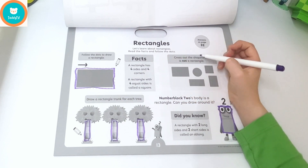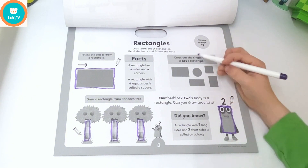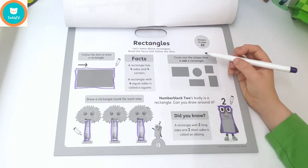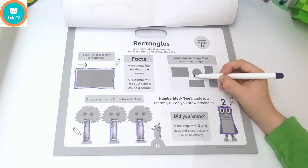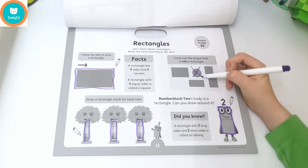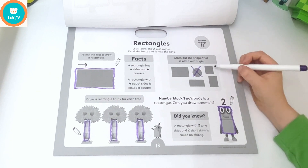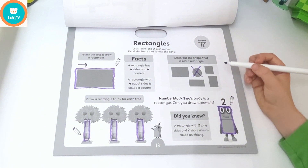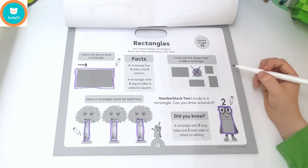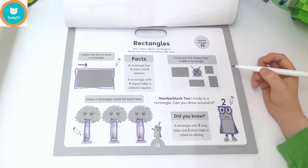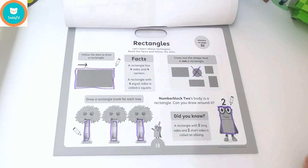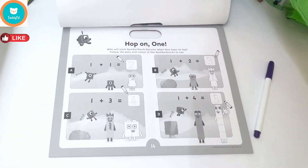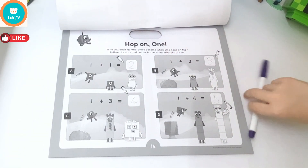Cross out the shape that is not a rectangle. Sorry, circle! A square is a rectangle because it still has four sides. A square is a rectangle — hop on one!